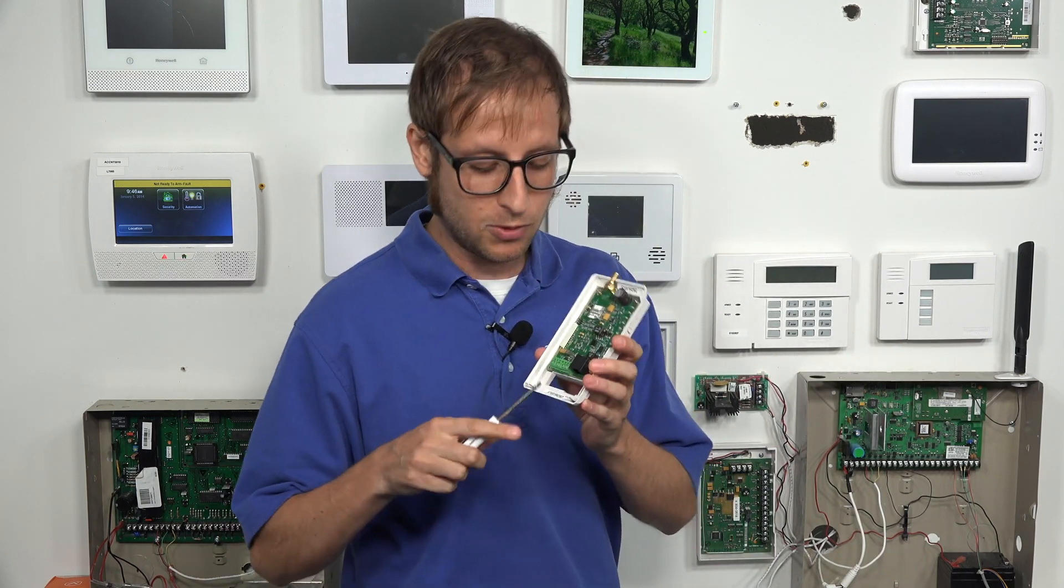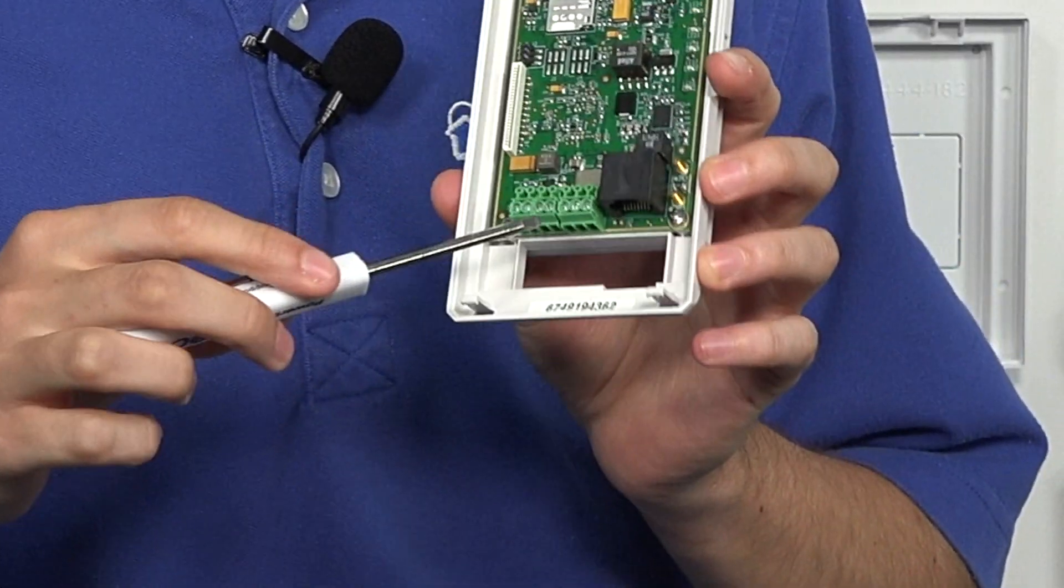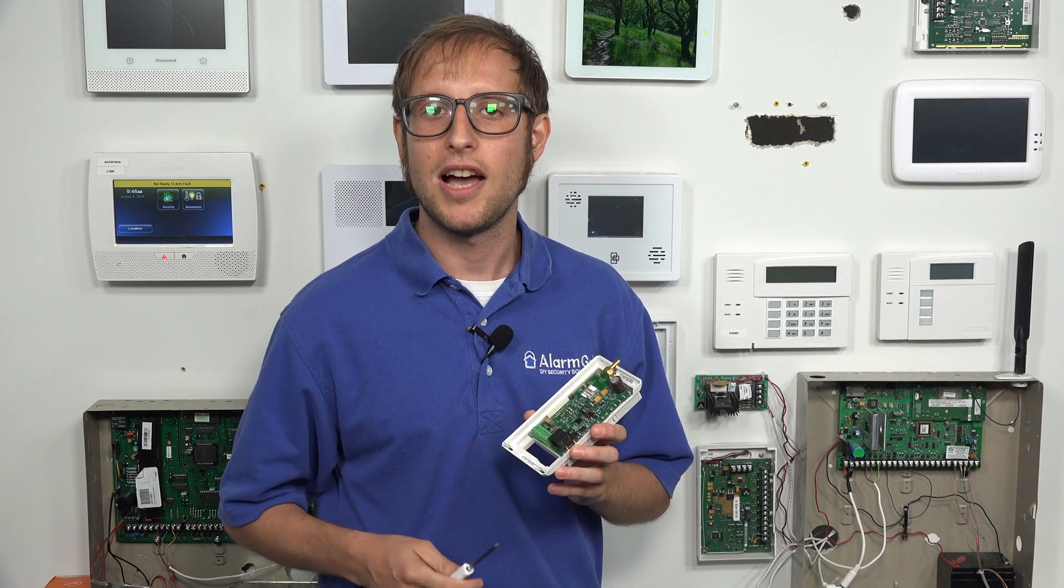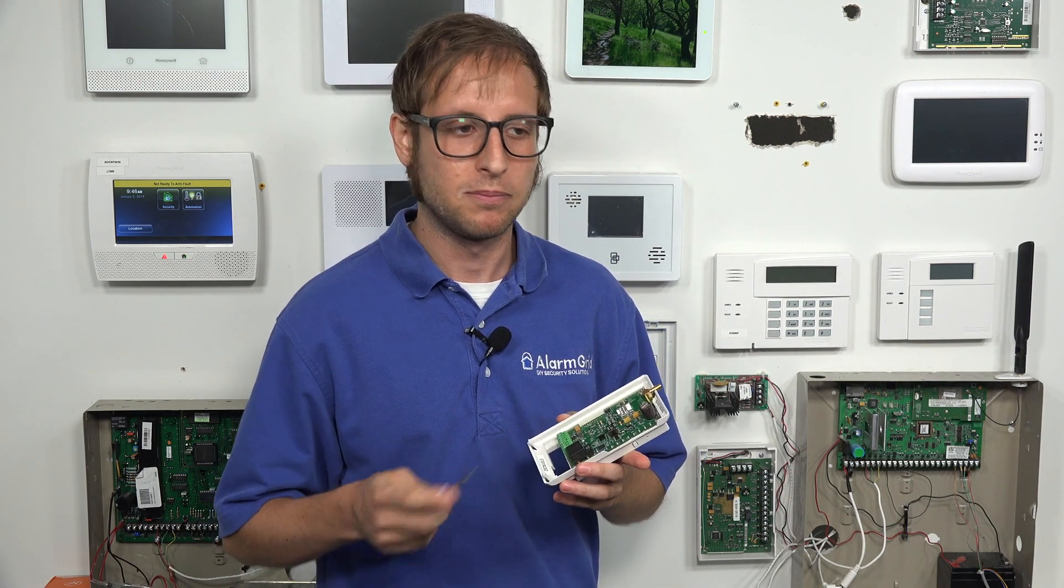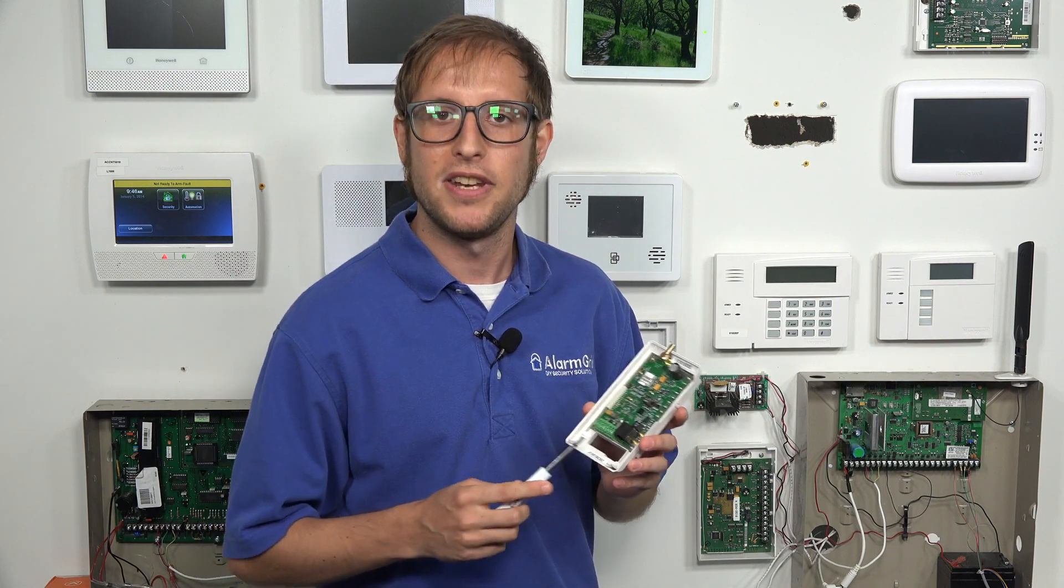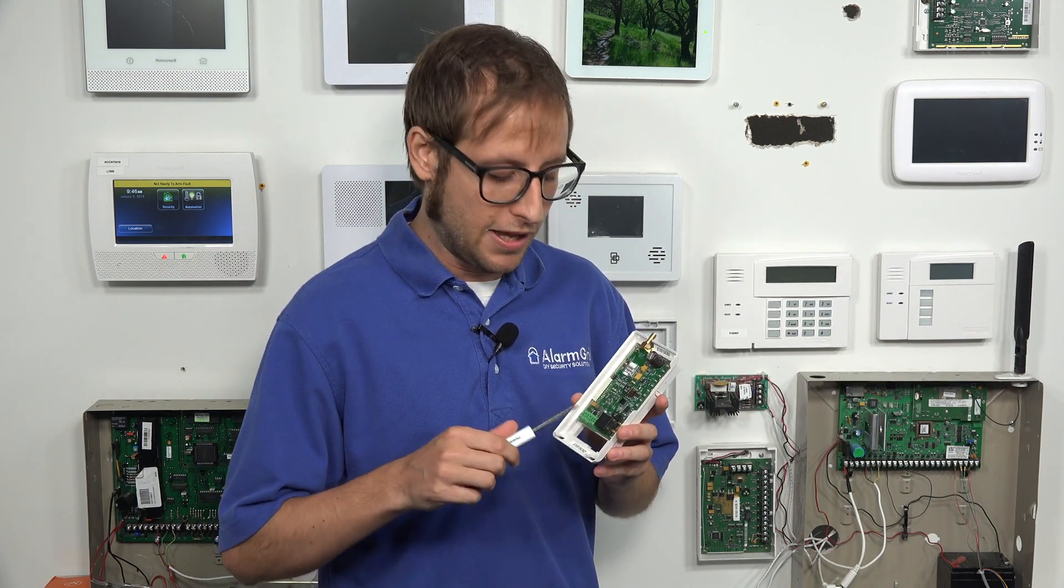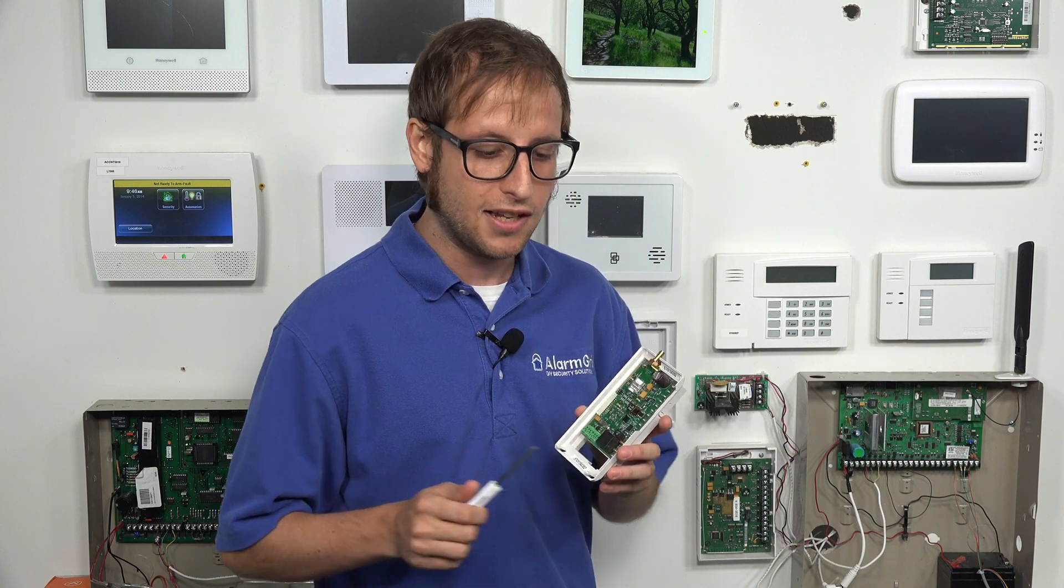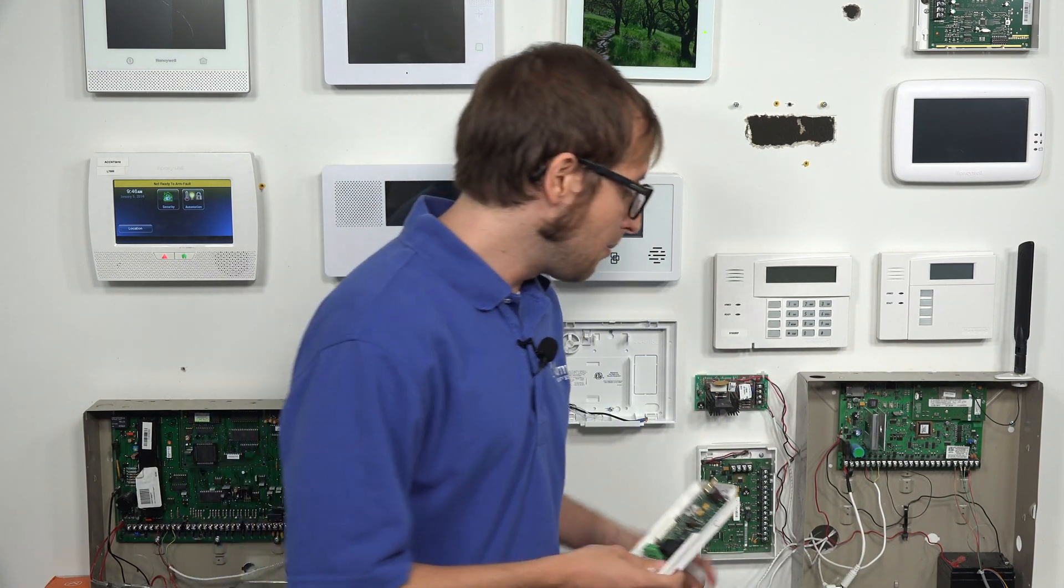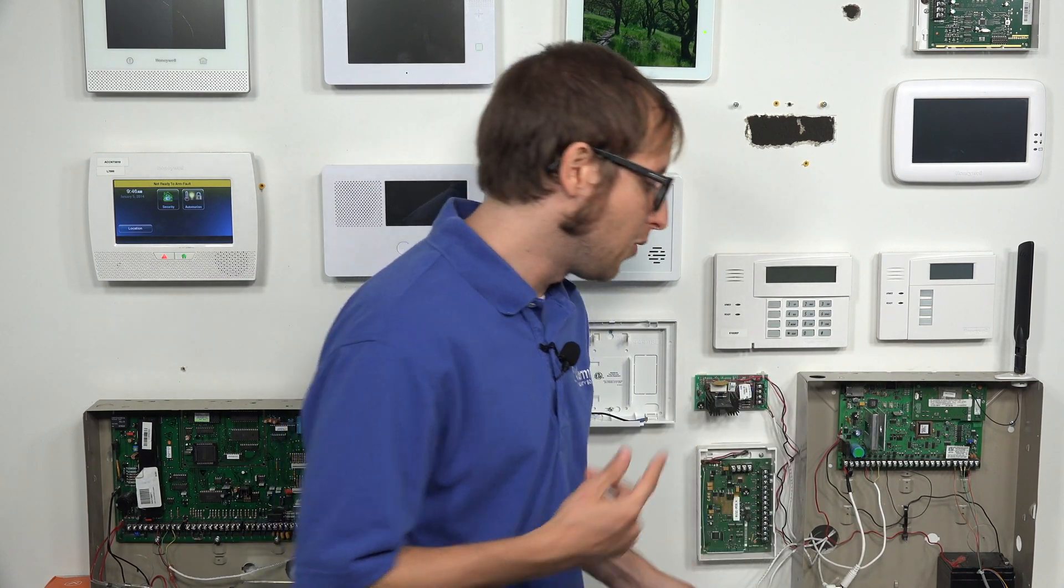So we have our terminal block here. If you see, it covers up the labels there. But if you refer to the quick install guide, it does show the labeling of everything. We're actually going to be using these right two terminals, one's for the negative power connection, the ground connection, and the one closest to the phone jack is for the positive power. But before we do these power connections, just one thing real quick.